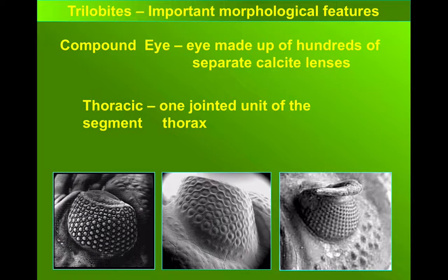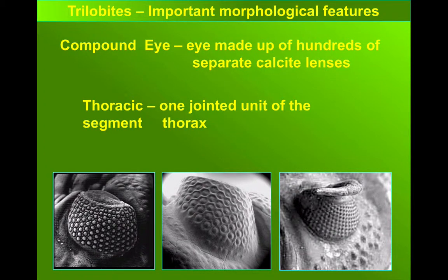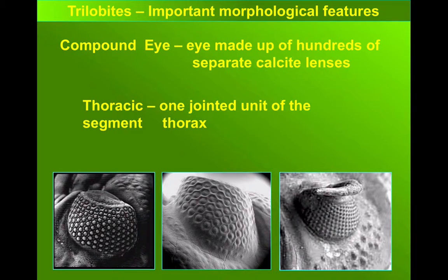One of the most fascinating features of a trilobite are its eyes — they're one of the first animals for which we have definitive evidence that they could see. Not all trilobites had eyes; we suspect those without perhaps burrowed into the mud where eyes would have been unnecessary. But in those fossils where we do find them, we see incredible complex compound eyes, some of which had hundreds of individual calcite lenses.